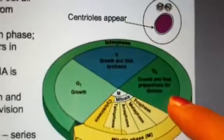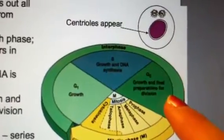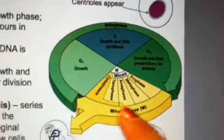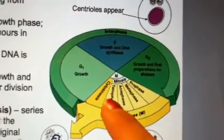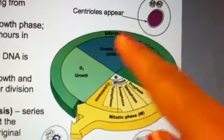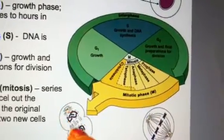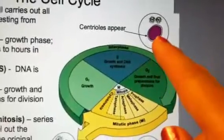After the cell goes through interphase and does these three sub-phases, it will enter something that a lot of you have heard of called mitosis. And we'll be talking about those phases more. When it completes this entire cycle, it will hopefully make two new daughter cells from one original cell.